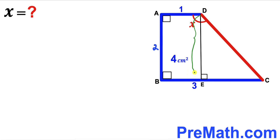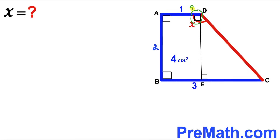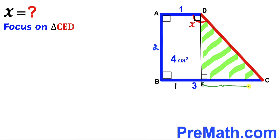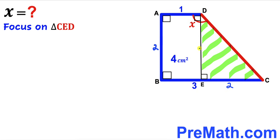In the next step, I've dropped a perpendicular DE on base BC. Since this angle is 90 degrees, this angle is 90 degrees as well. Focusing on right triangle CED: base AD is one centimeter, so segment BE is also one centimeter, and therefore the remaining segment CE is three minus one, giving us two centimeters.